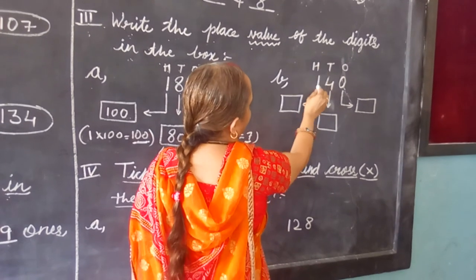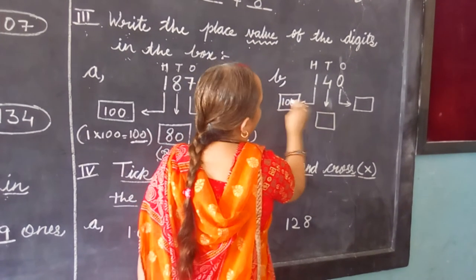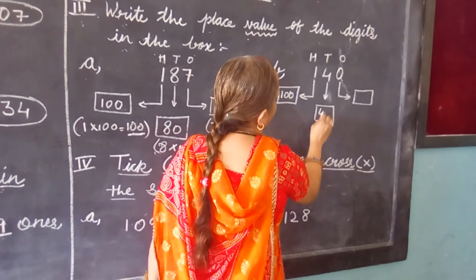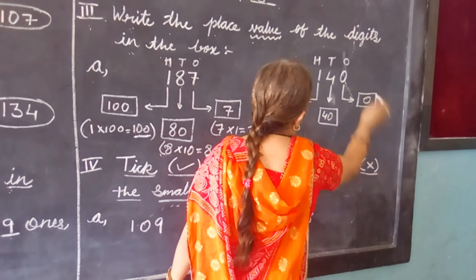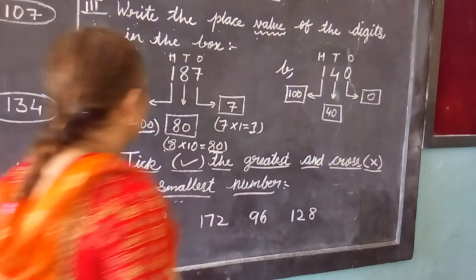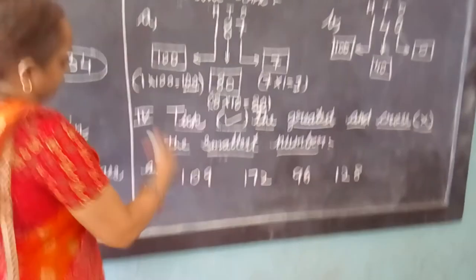1 into 100 is 100. 4 into 10, 4 tens are 40. 0 multiplied by 1, 0 is the answer. Now come for the next question.